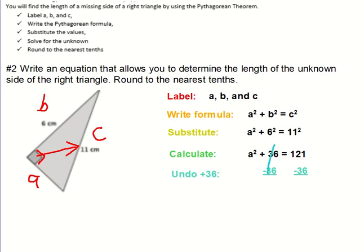Bring down your A squared. And then do 121 minus 36. Let's see what we get. So we're going to have A squared equals 85.